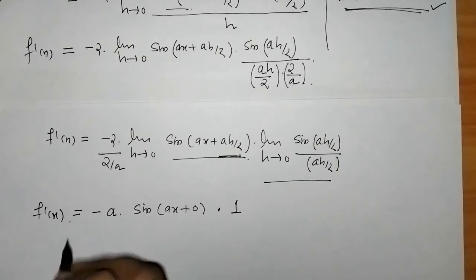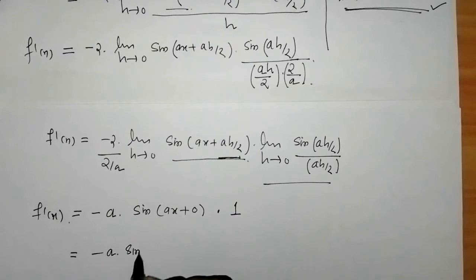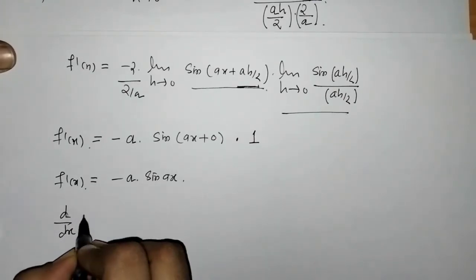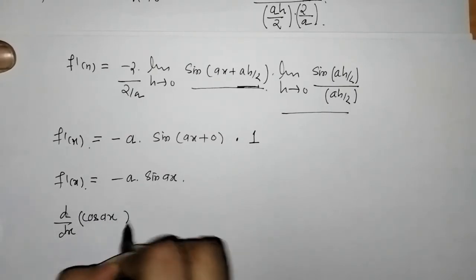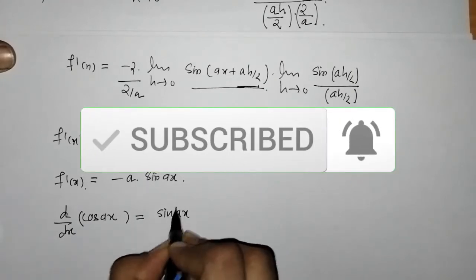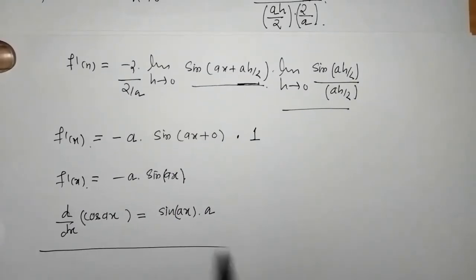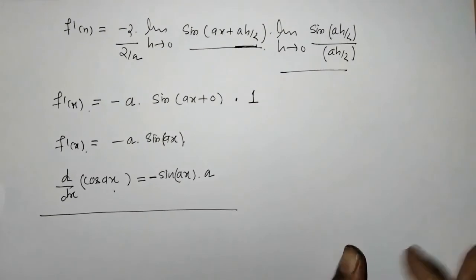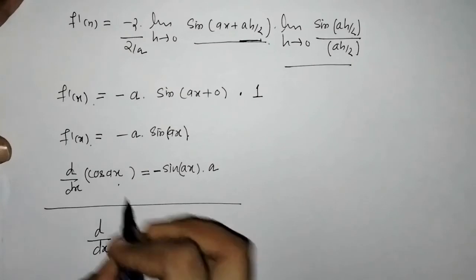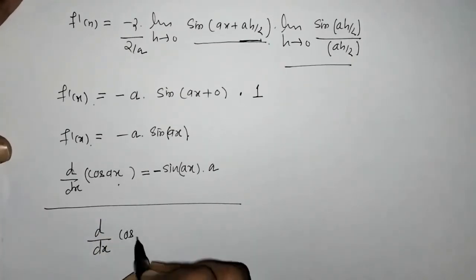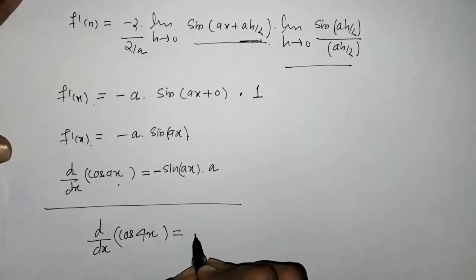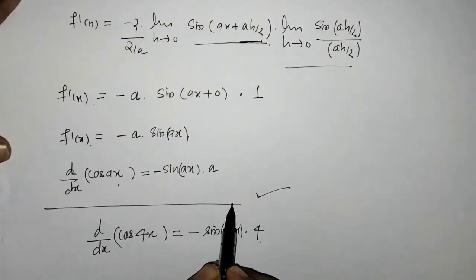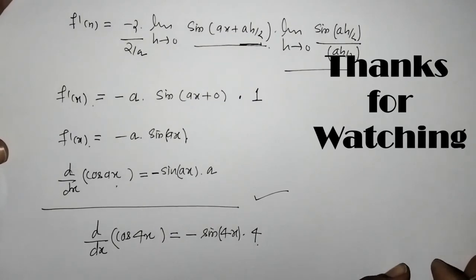On simplification, putting h = 0, sin(ax + 0) = sin(ax) and the limit result equals 1. So we get −a · sin(ax). The derivative of cos(ax) is equal to −a · sin(ax), where a is a constant. For example, the derivative of cos(4x) is −4 sin(4x). That's it for now — see you in the next video, thank you, keep watching.